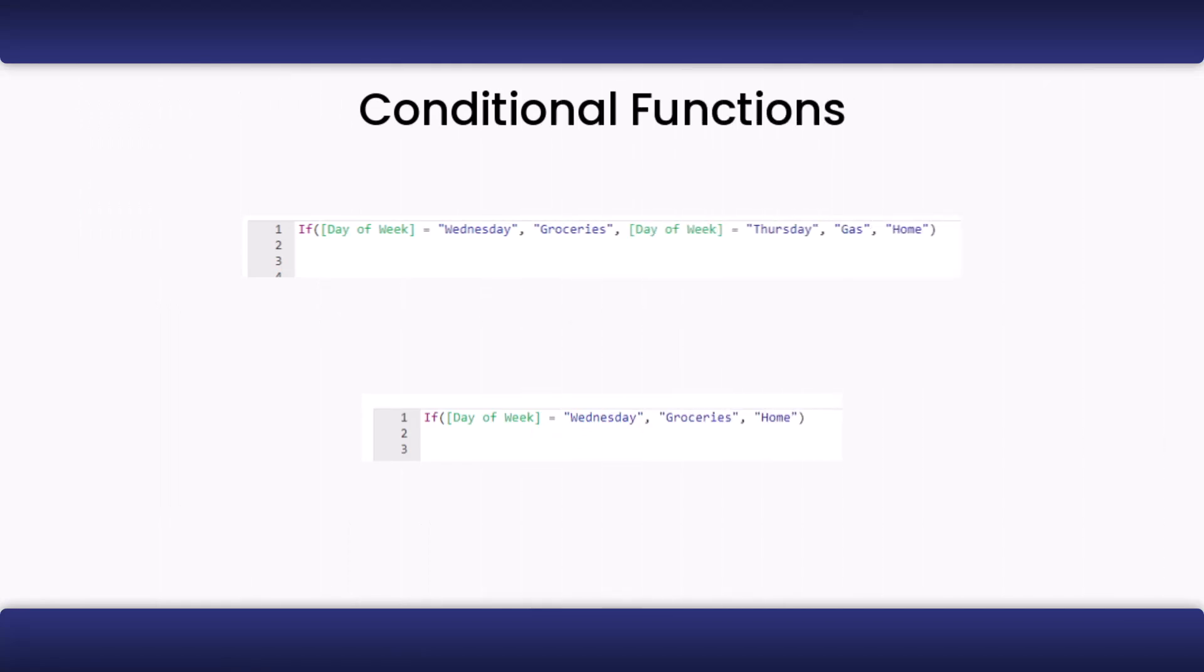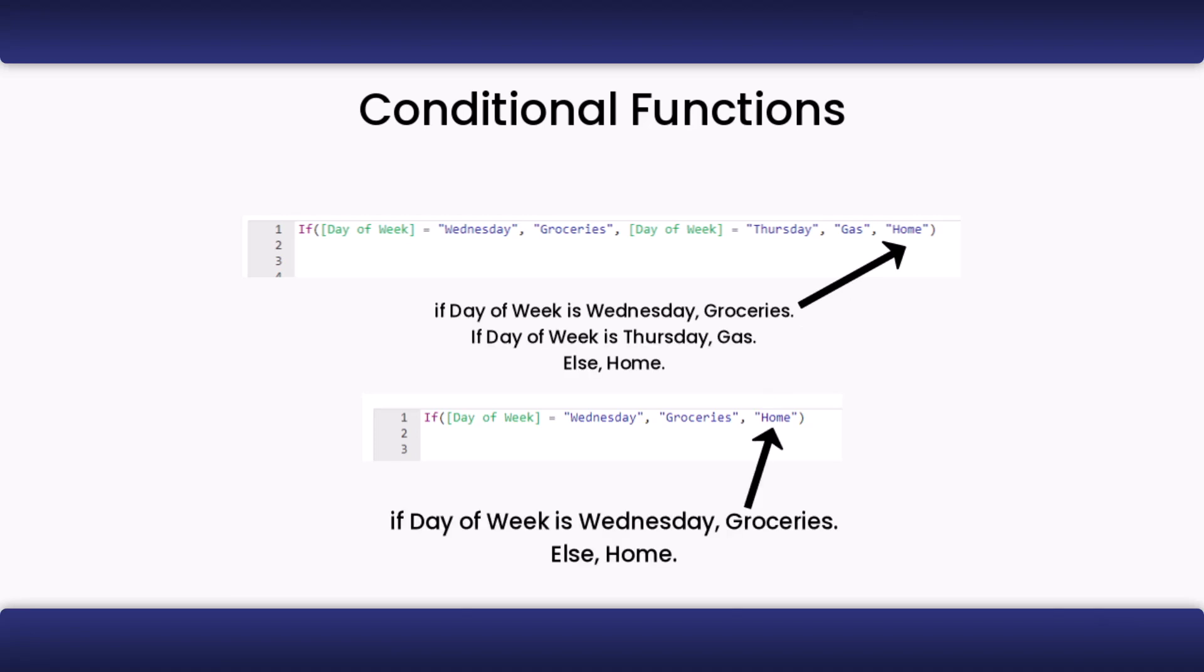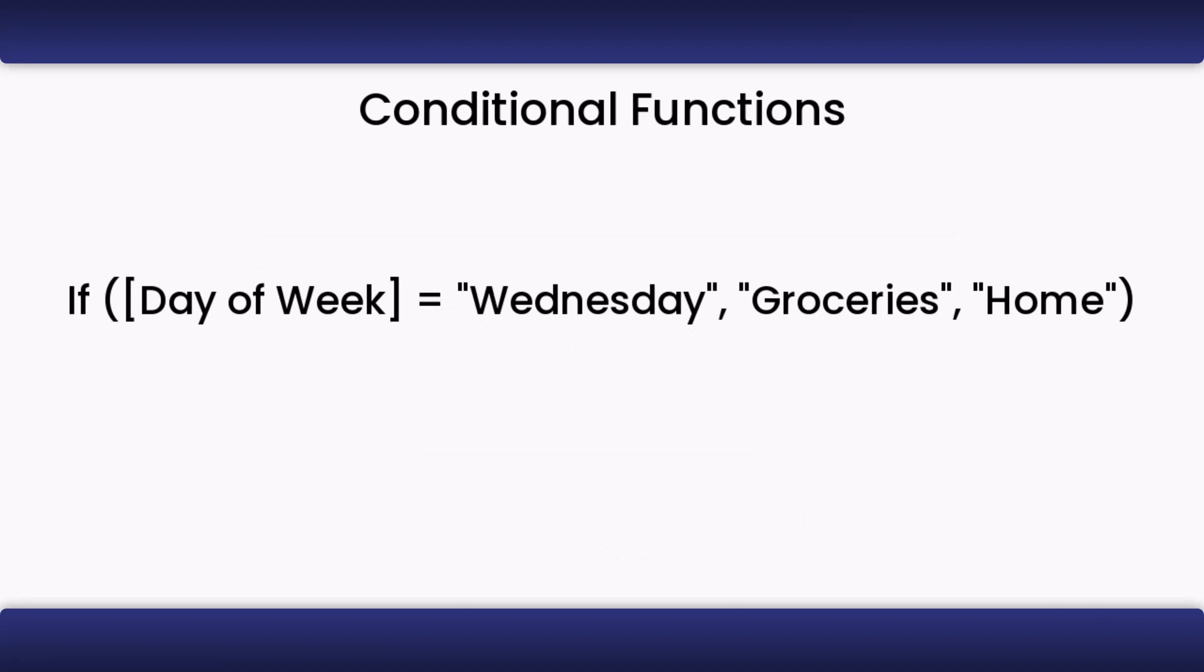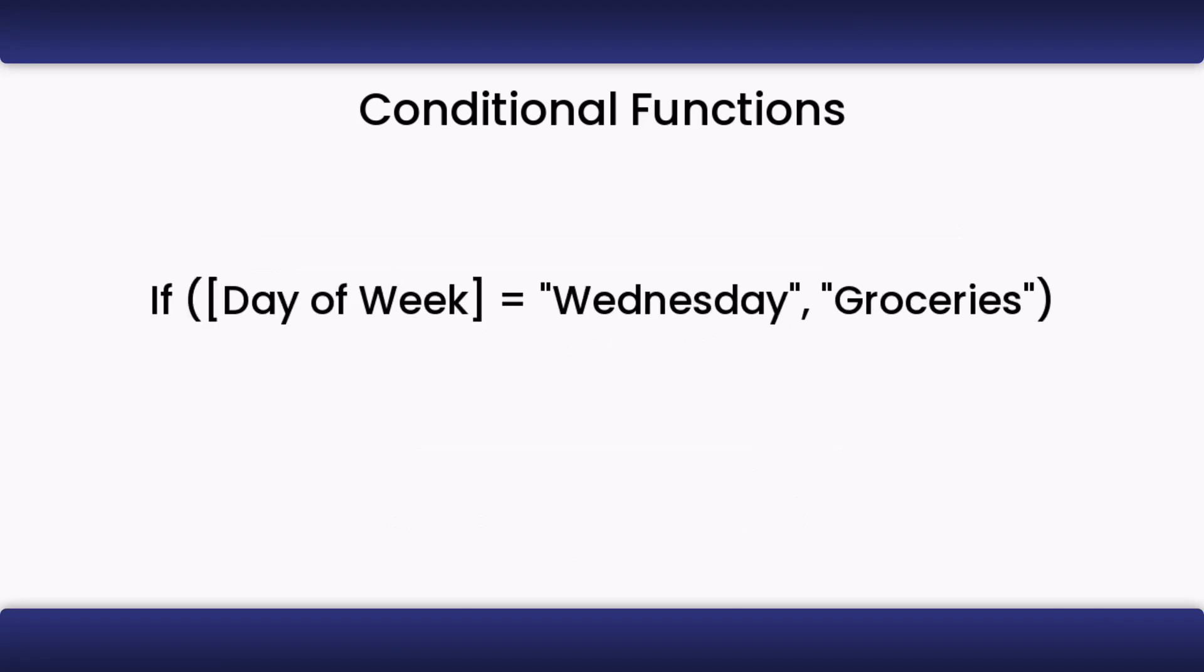The very last output of an if condition is the else output, which is given when none of the prior conditions were met. If you don't supply the else, in this case if we removed home, the if condition will end up outputting nothing if none of the conditions are met.